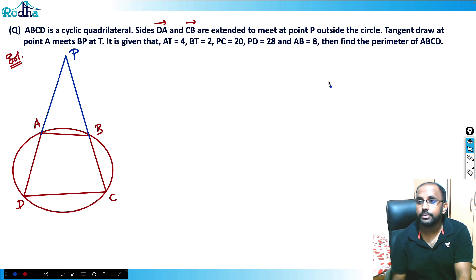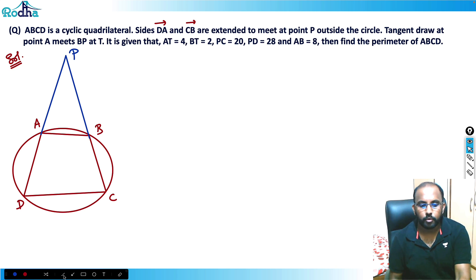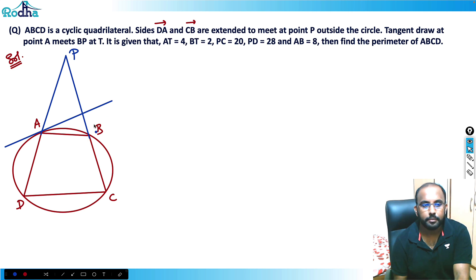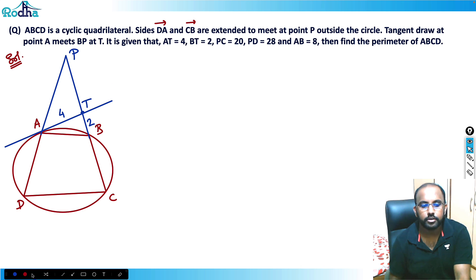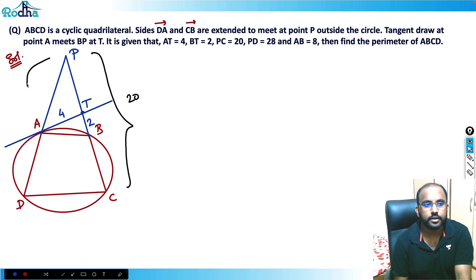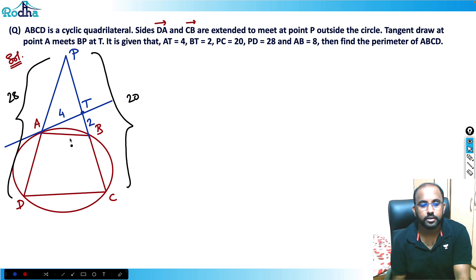A tangent drawn at point A meets BP at T. Let's draw this tangent at point A meeting BP at T. The given values are: AT = 4, BT = 2, PC = 20, PD = 28, and AB = 8.